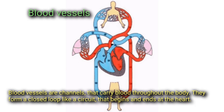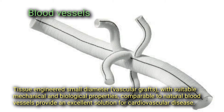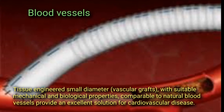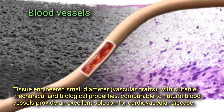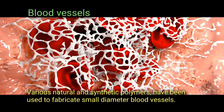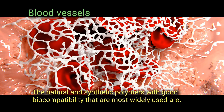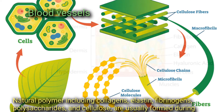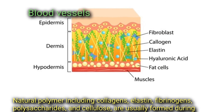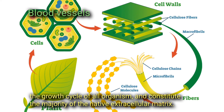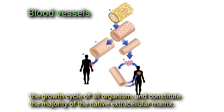Blood vessels carry blood throughout the body in a closed loop that begins and ends at the heart. Tissue-engineered small diameter vascular grafts with suitable mechanical and biological properties comparable to natural blood vessels provide an excellent solution for cardiovascular disease. Various natural and synthetic polymers have been used to fabricate small diameter blood vessels. Natural polymers including collagens, elastin, fibrinogens, polysaccharides, and cellulose are usually formed during the growth cycles of all organisms and constitute the majority of the native extracellular matrix.